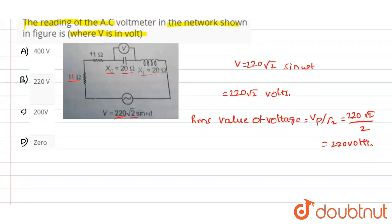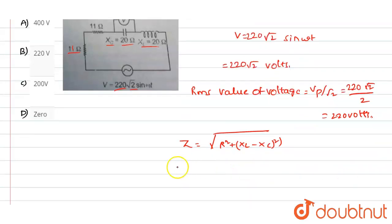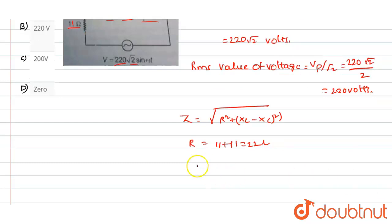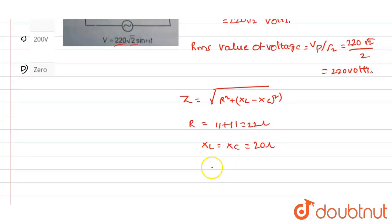Now Z value can be written as √(R² + (XL - Xc)²). We have the values of XL, Xc and resistance value, so just need to substitute. R will be equal to 11 plus 11, so that will be equal to 22 ohms. XL is equal to Xc, so that will be 20 ohms, and R value we have as 22 ohms.